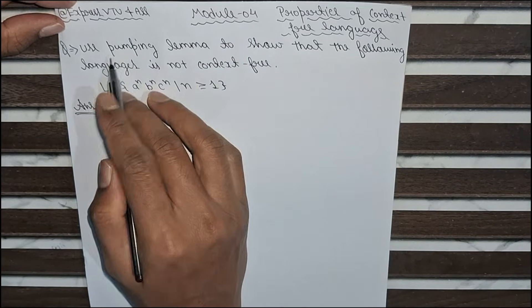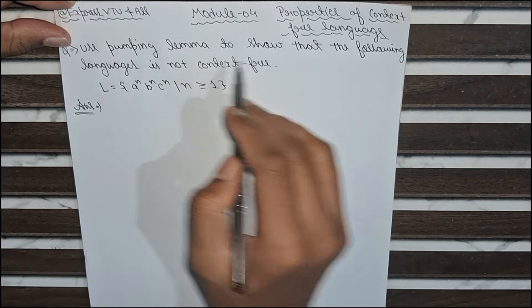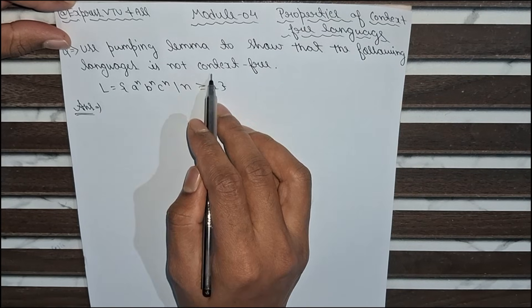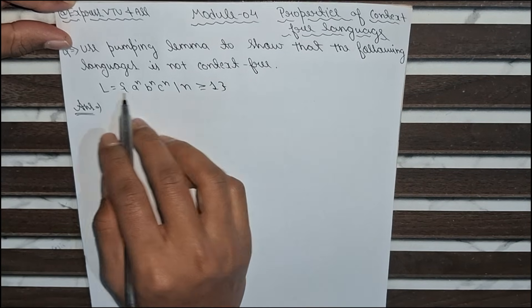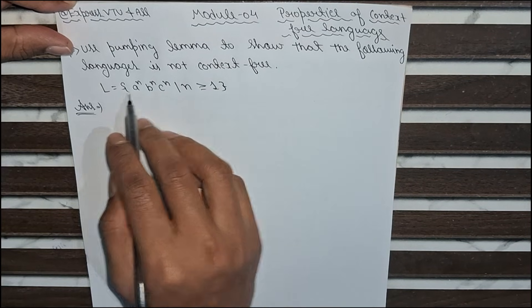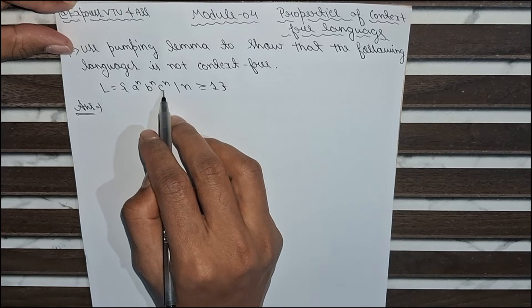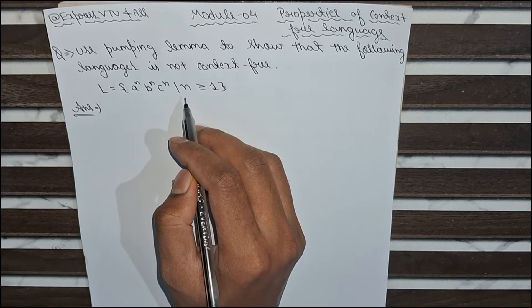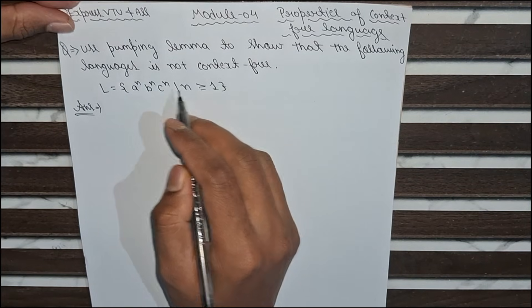So the question is: use the Pumping Lemma theorem to show that the following language is not context free. The language given is a to the power n, b to the power n, and c to the power n, where n is greater than or equal to 1.